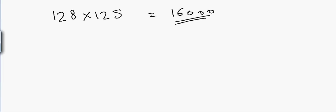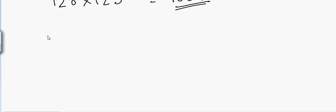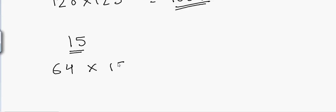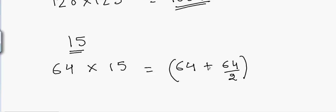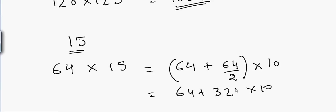Multiplying by 15 is a little different. Suppose I have 64 and want to multiply it by 15. I take 64, add half of 64 to it, and then multiply by 10. That gives (64 + 32) × 10 = 96 × 10 = 960.